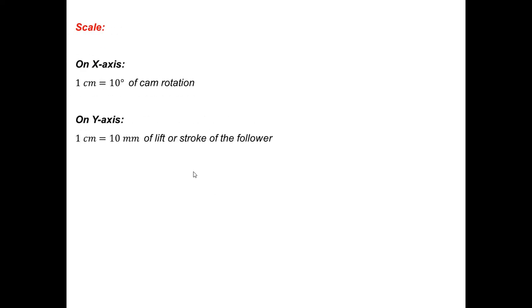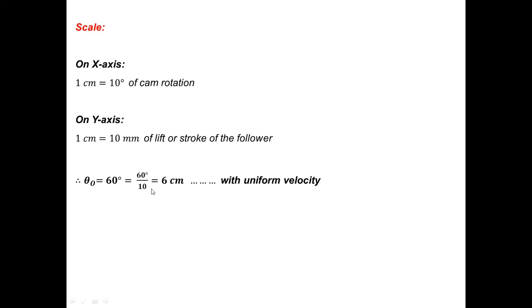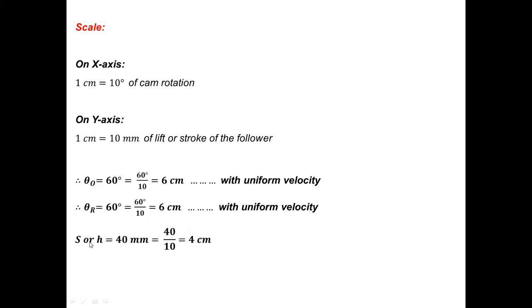Now let us choose the scale. On the x-axis, 1 cm equals 10 degrees of cam rotation. On the y-axis, 1 cm equals 10 mm of lift or stroke of the follower. The out stroke is 60 degrees, so 60 divided by 10 gives 6 cm on the displacement diagram. Similarly, the return stroke is also 6 cm. The lift or height of the follower is 40 mm, so 40 divided by 10 gives 4 cm on the y-axis.